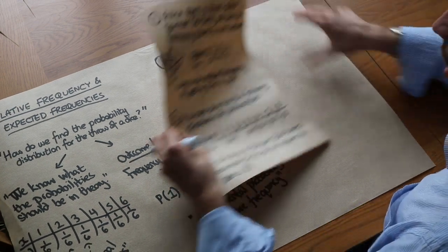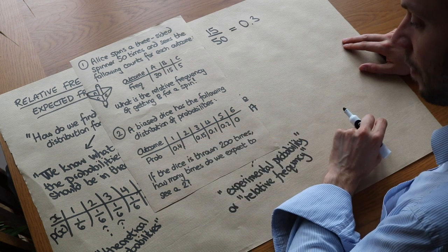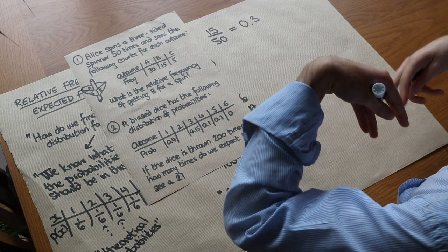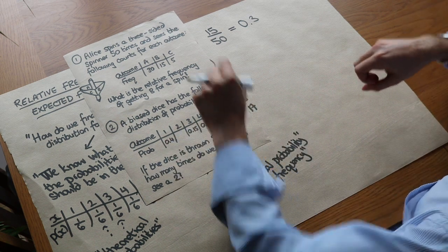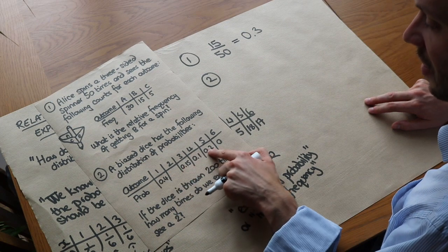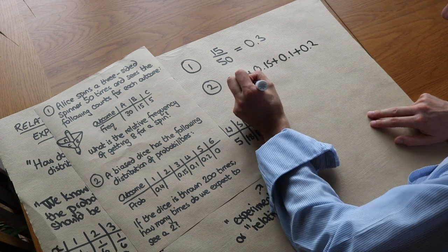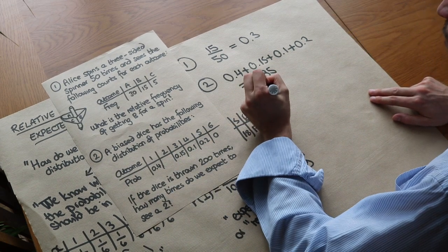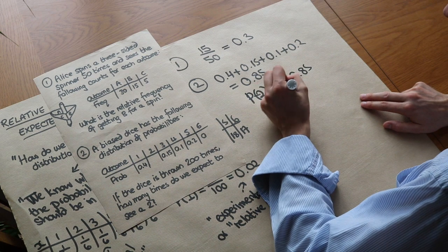A biased dice has the following distribution of probabilities for outcomes 1 to 6, with one probability missing. If the dice is thrown 200 times, how many times do we expect to see a 2? This is the opposite of before — before we used counts to estimate probabilities; this time we have the probabilities and want to estimate the count. We need to find the probability of rolling a 2. Since probabilities must add up to 1, we add the others: 0.4 + 0.15 + 0.1 + 0.2 + 0.0 = 0.85, so the probability of getting a 2 is 1 − 0.85 = 0.15.